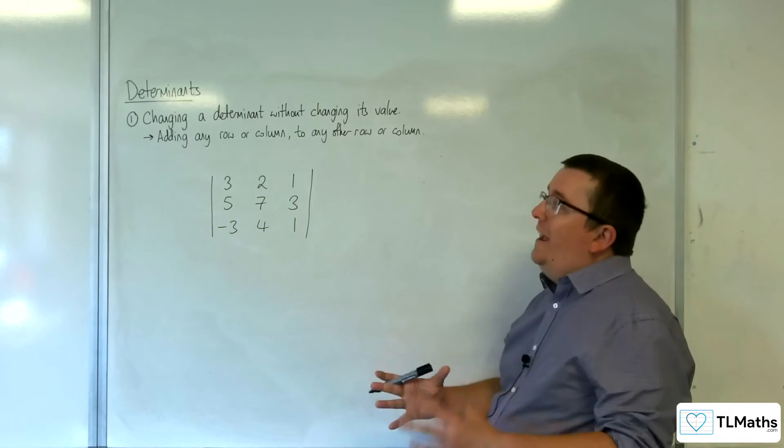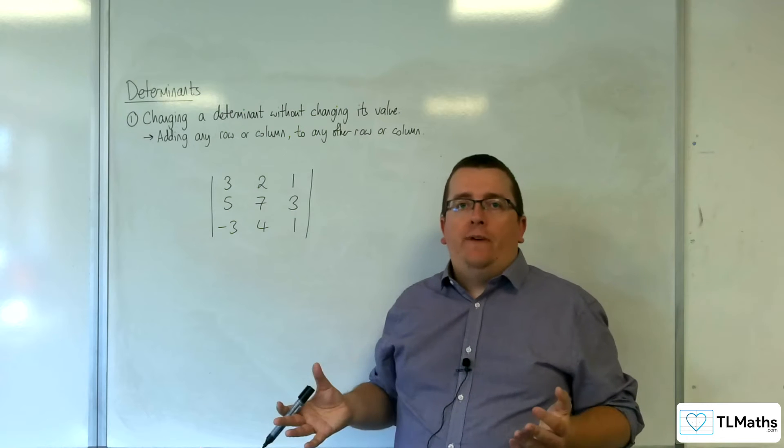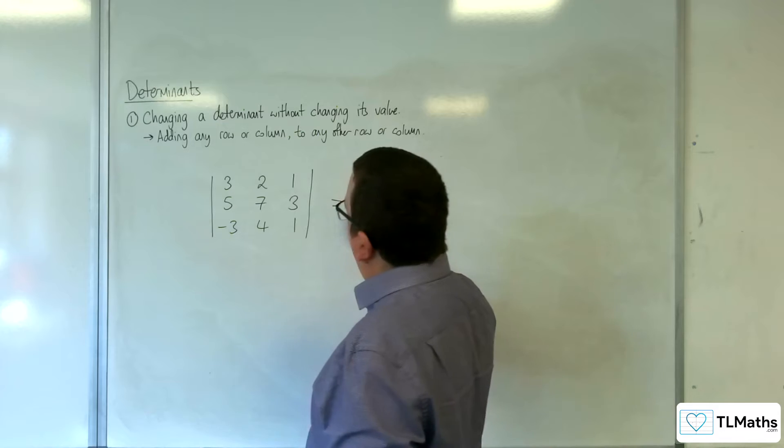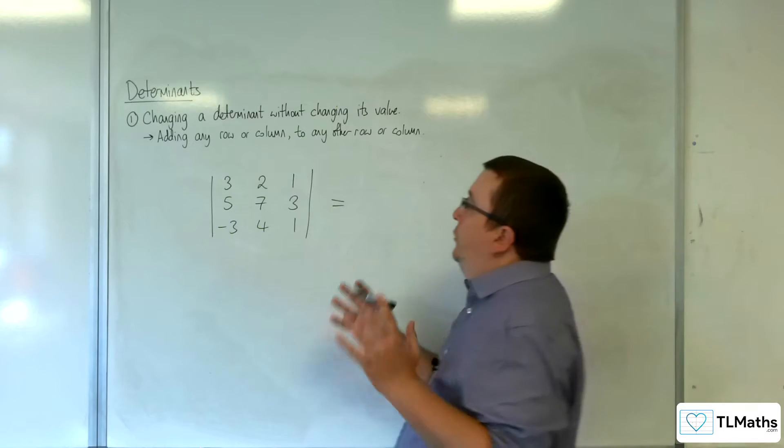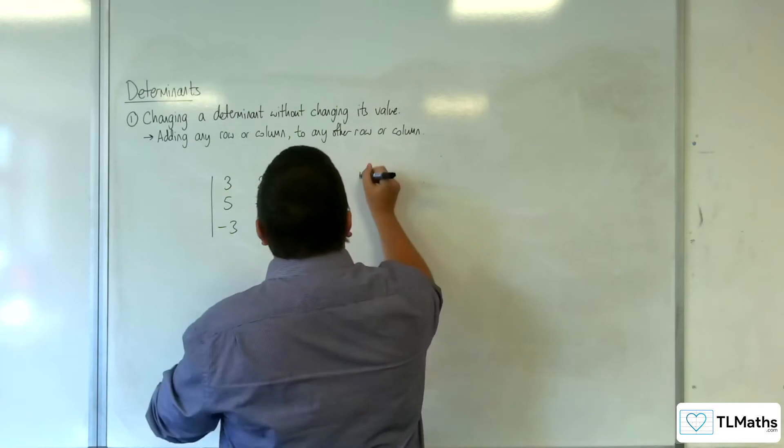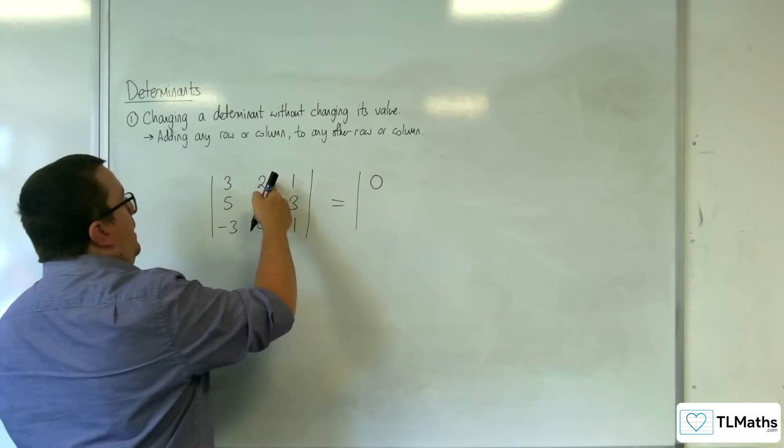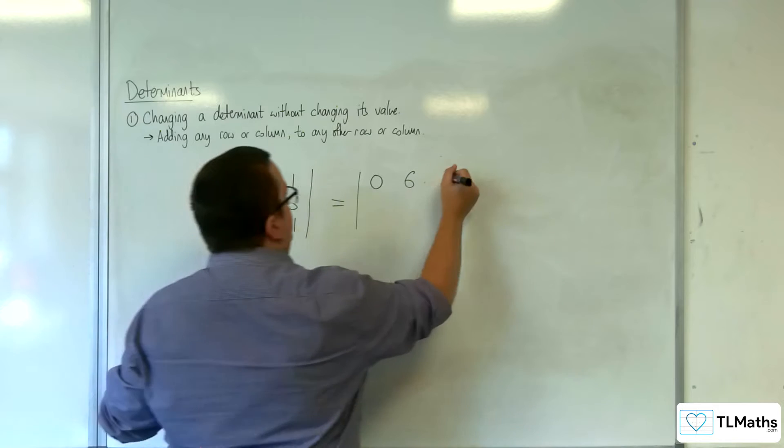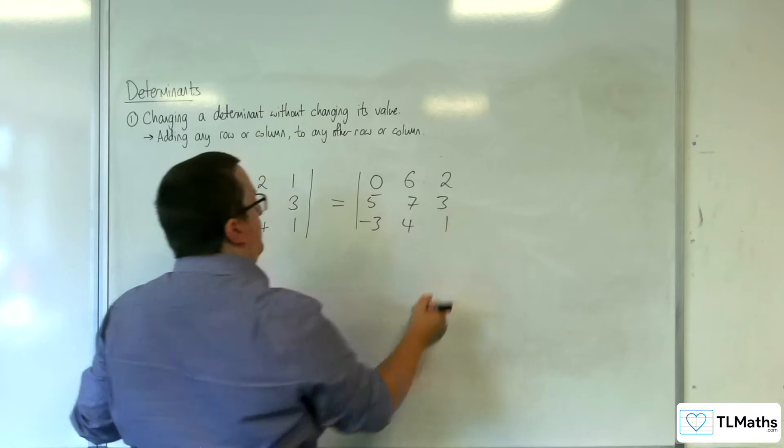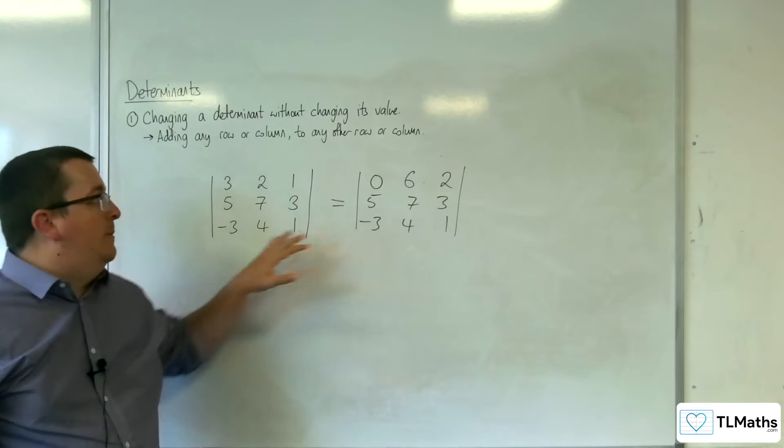The first thing to look out for is that you can add any row or column to any other row or column without changing the value of the determinant. So if you're trying to work out this, for example, you are perfectly free to add row 3 to row 1. So if you did that, you'd have 3 plus negative 3, 2 plus 4, and 1 plus 1. And the value of this determinant is going to be precisely the same as this one.